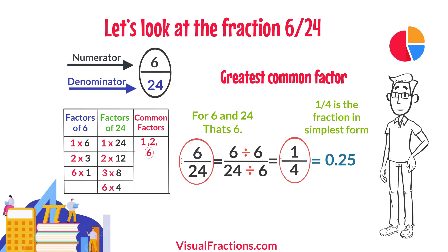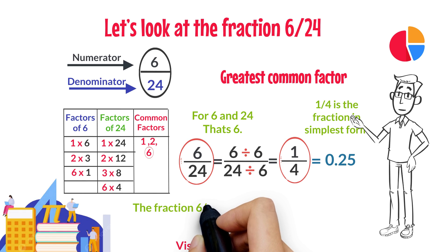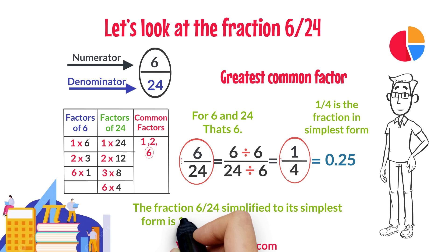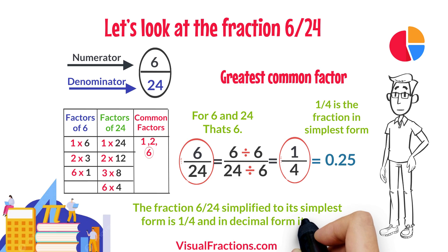So, there you have it. The fraction 6/24 simplified to its simplest form is 1/4, and in decimal form, it's 0.25.